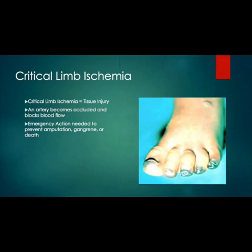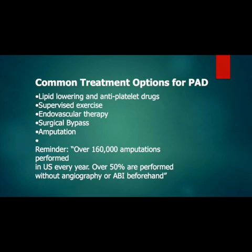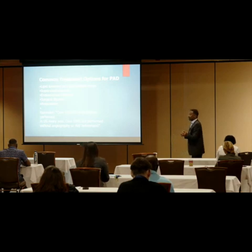Critical limb ischemia — when patients see this, they come in. If we see this, we know we have to act immediately. If we don't, that's going to lead to amputation of either a digit, a transmetatarsal amputation (TMA), or a below-knee (BK) amputation. Common treatment options require a multidisciplinary approach. Diabetic patients are typically referred to us by their primary care physician, who should be doing an annual assessment including asking patients to remove socks and shoes.